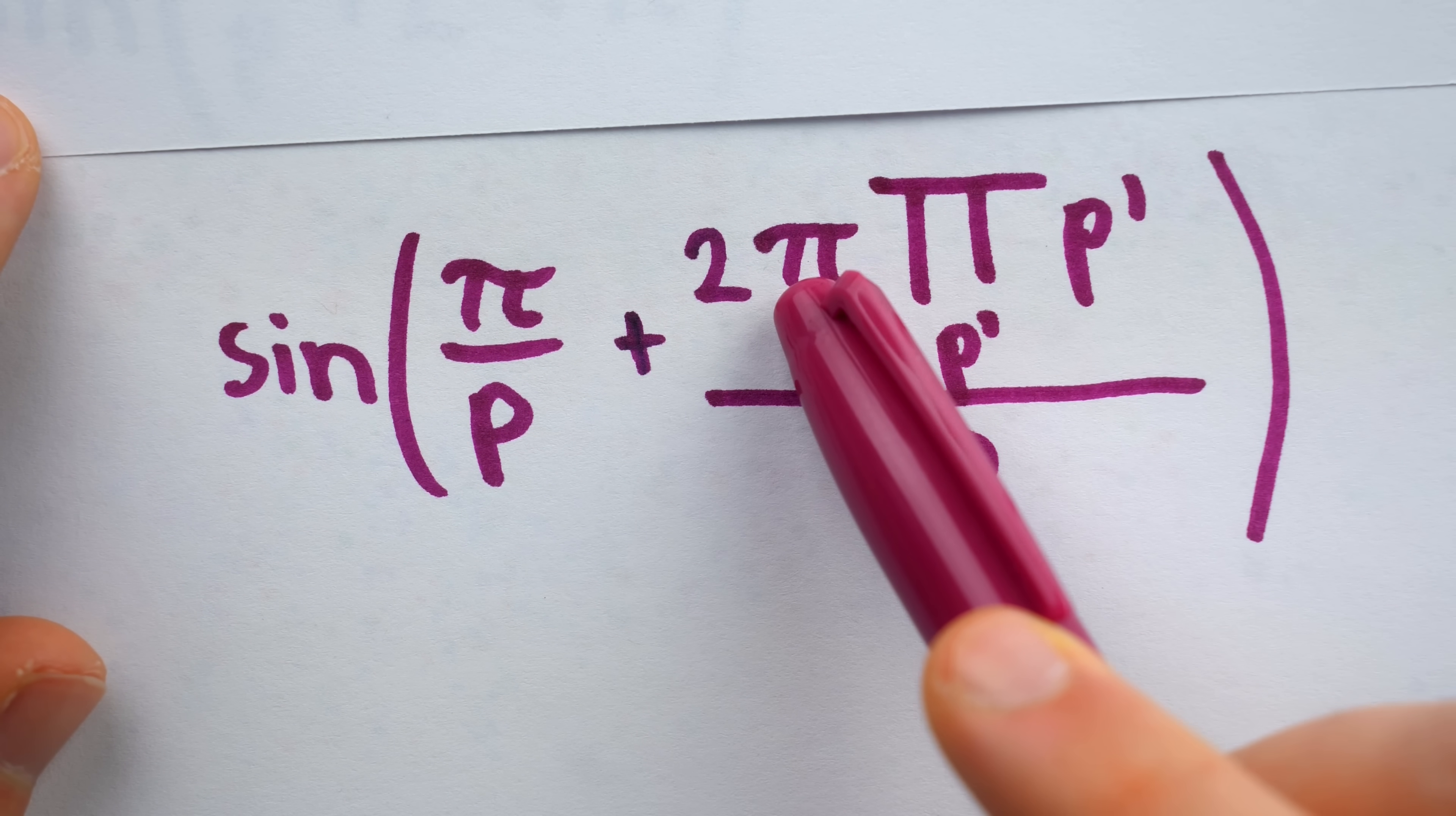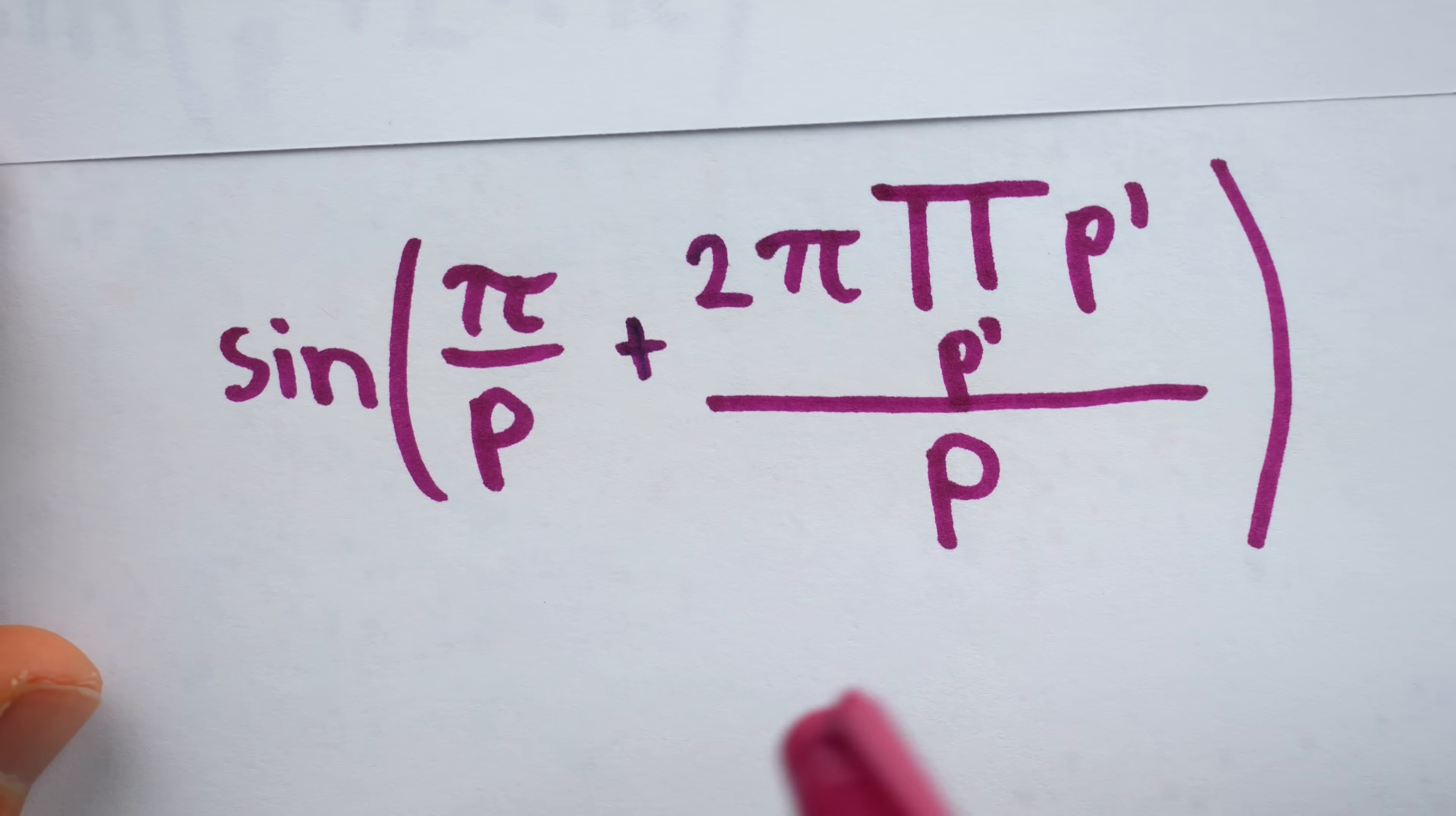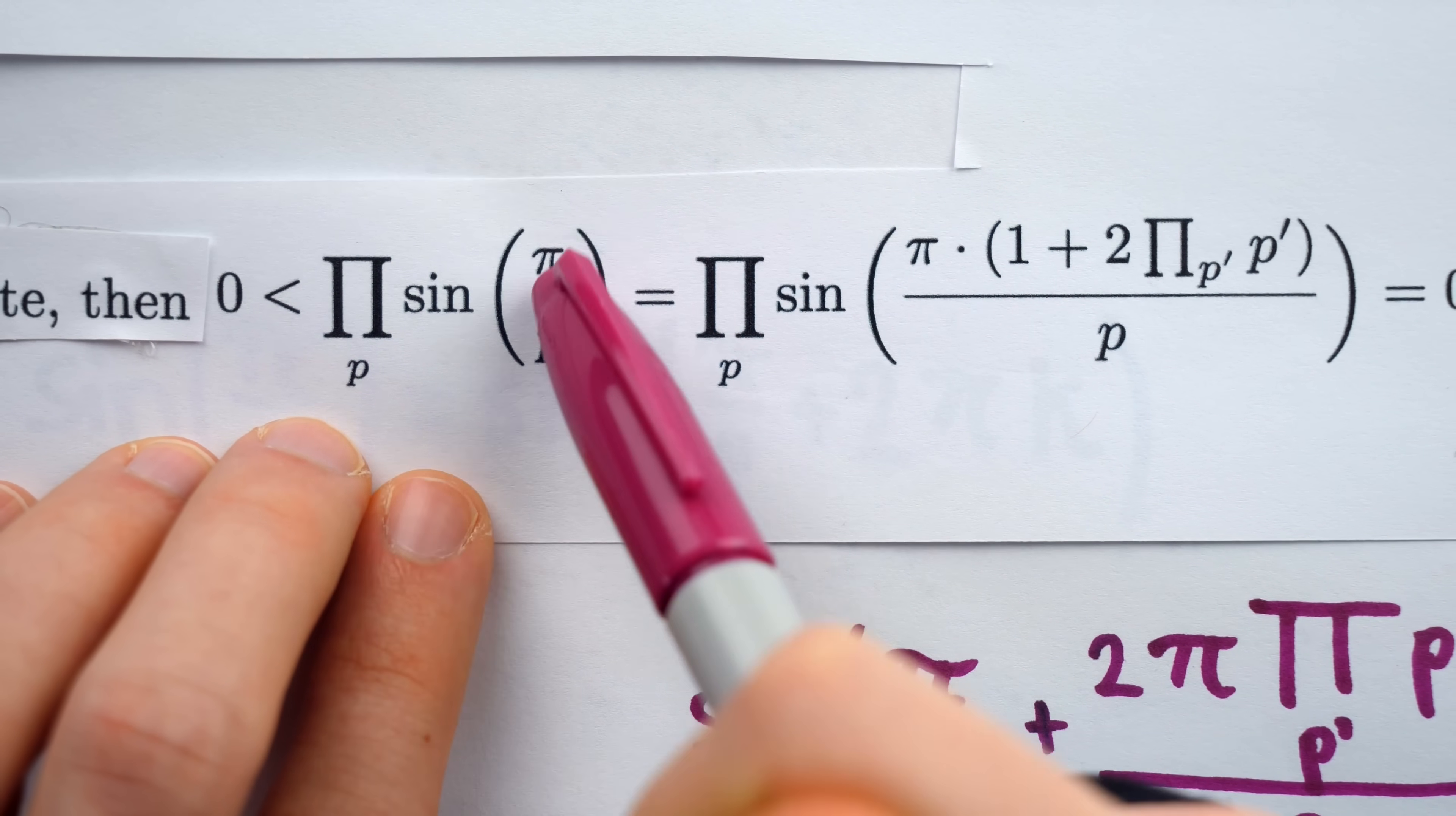Since we're adding an integer multiple of 2 pi inside the sine function, the value doesn't change, and so for sure this equality holds.